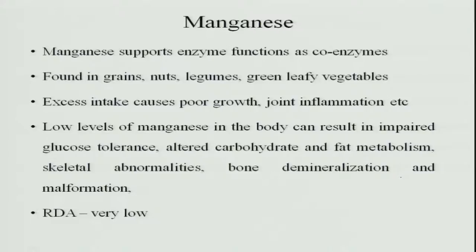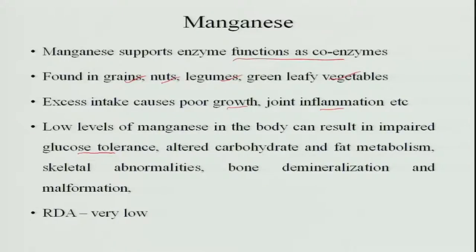Another trace mineral is manganese, which supports enzyme function — it acts as a coenzyme in many metabolic reactions involving carbohydrates, proteins, and fats. It is found widely in grains, nuts, legumes, and green leafy vegetables. Excess intake causes poor growth and joint inflammation. Low levels of manganese impair glucose tolerance, cause altered carbohydrate and fat metabolism, and lead to skeletal abnormalities because it is involved in bone growth, with bone demineralization and malformation.